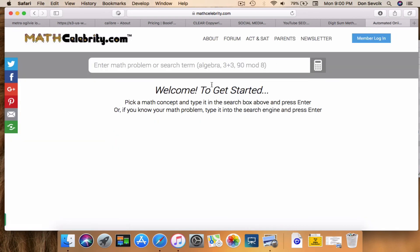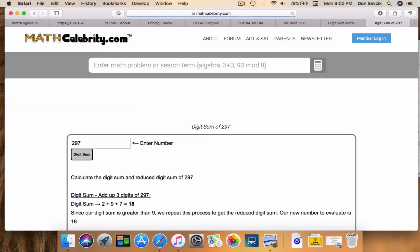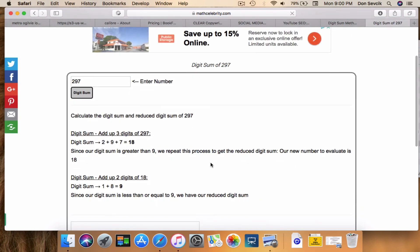This is the Math Celebrity website. You're going to jump in the search box up at the top here and you're going to type, let's say, 'digit sum of 297'. So this will run your digit sum.